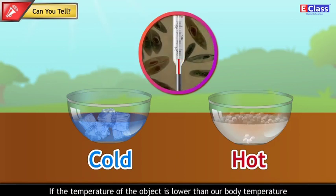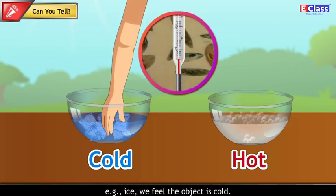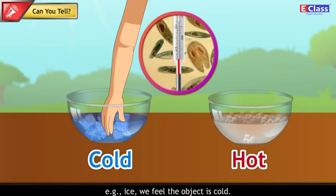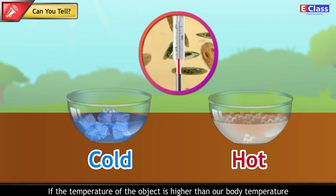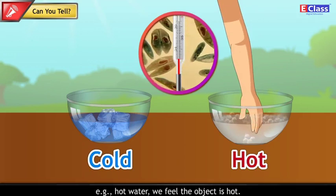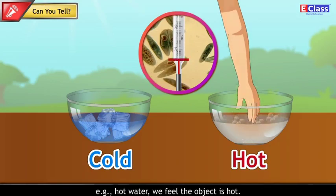If the temperature of the object is lower than our body temperature, example ice, we feel the object is cold. If the temperature of the object is higher than our body temperature, example hot water, we feel the object is hot.